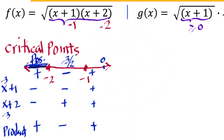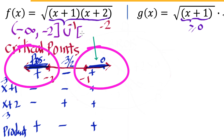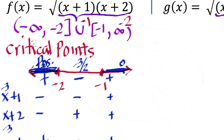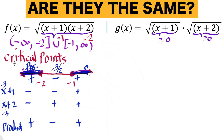Since we want the product (x+1)(x+2) to be greater than or equal to 0, the permissible values for x are the positive-sign regions. So we take the union: from negative infinity to -2 (endpoint included) union from -1 (endpoint included) to positive infinity — that is the domain of f. Graphically, from -2 you go left, and from -1 you go right.